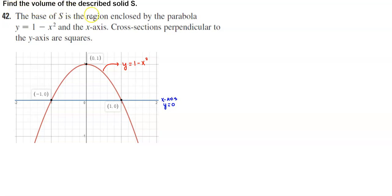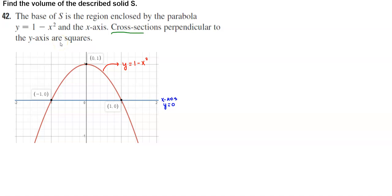Find the volume of the described solid S. The base of S is the region enclosed by the parabola y equals 1 minus x squared and the x-axis, which is the horizontal line y equals 0. The cross sections perpendicular to the y-axis are squares.